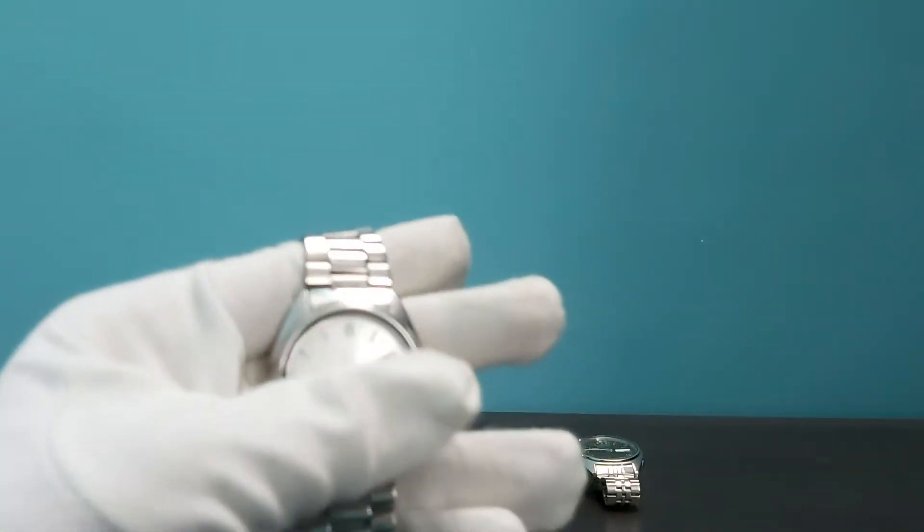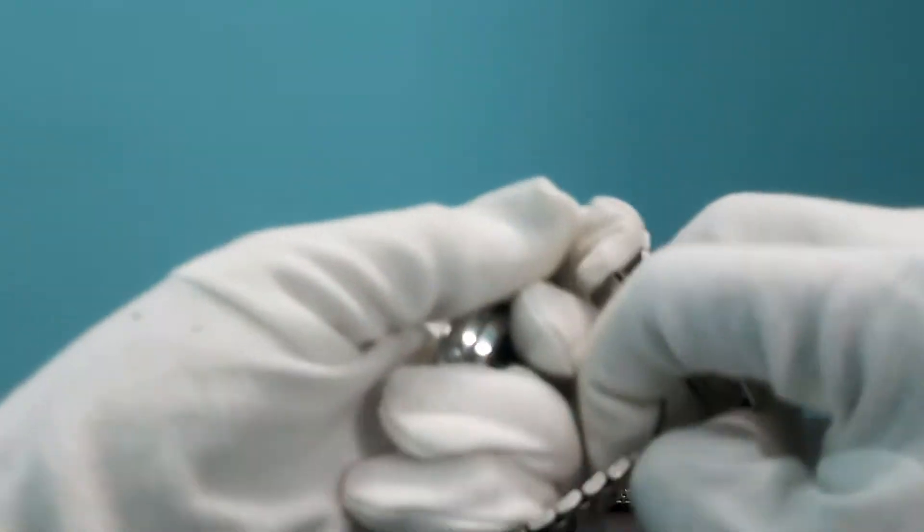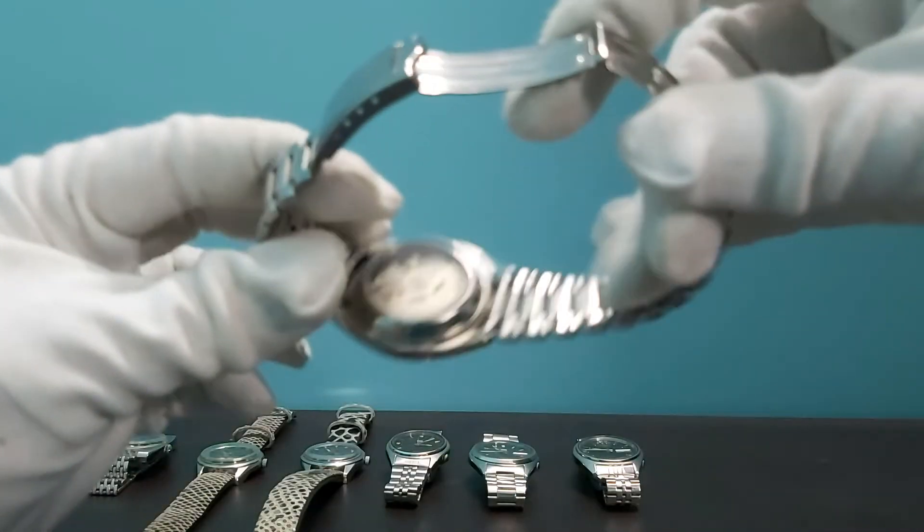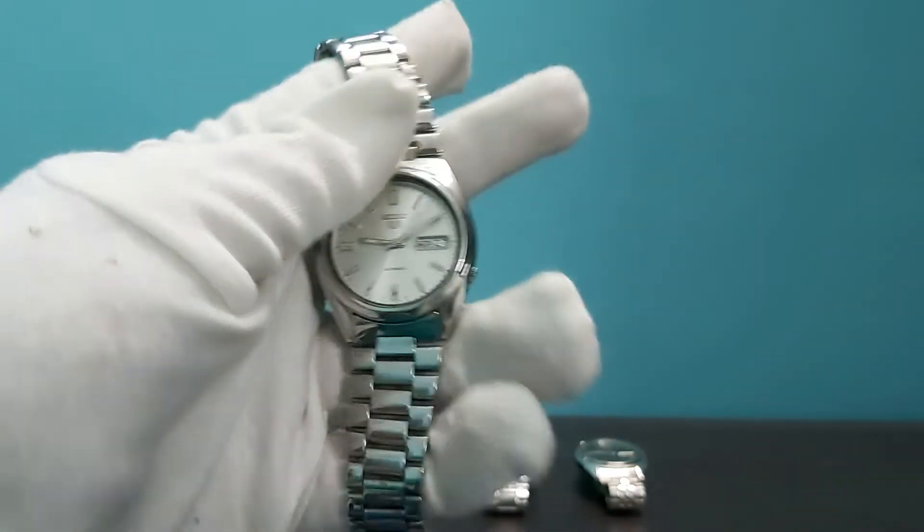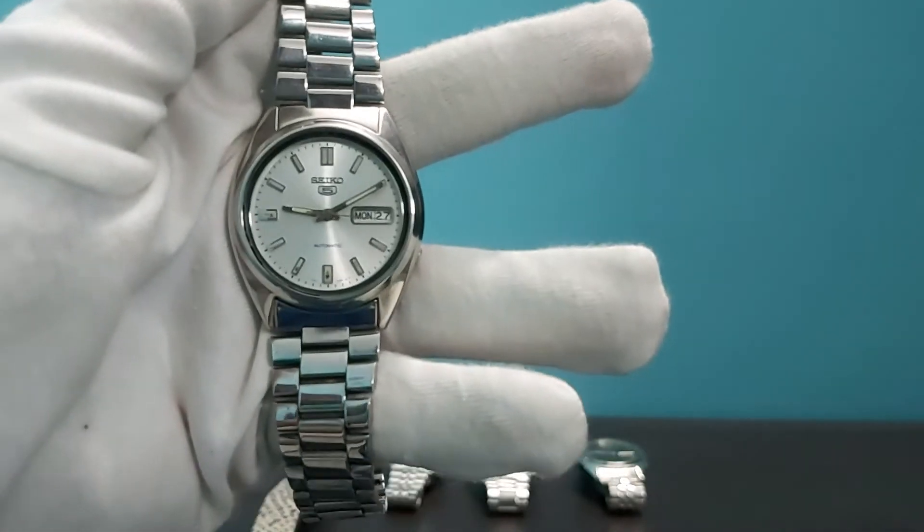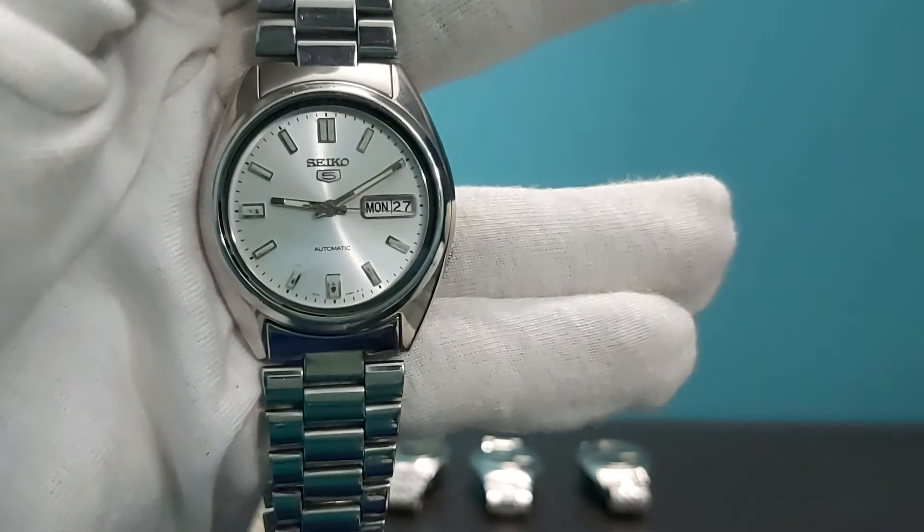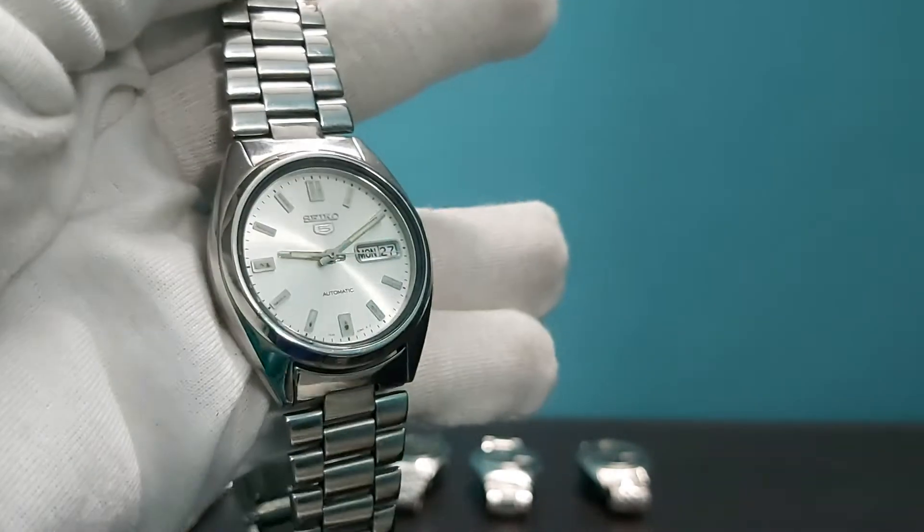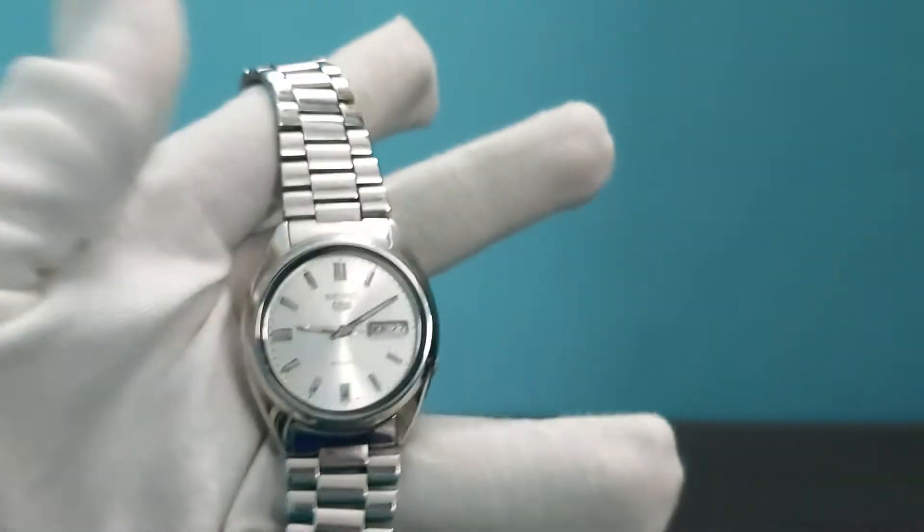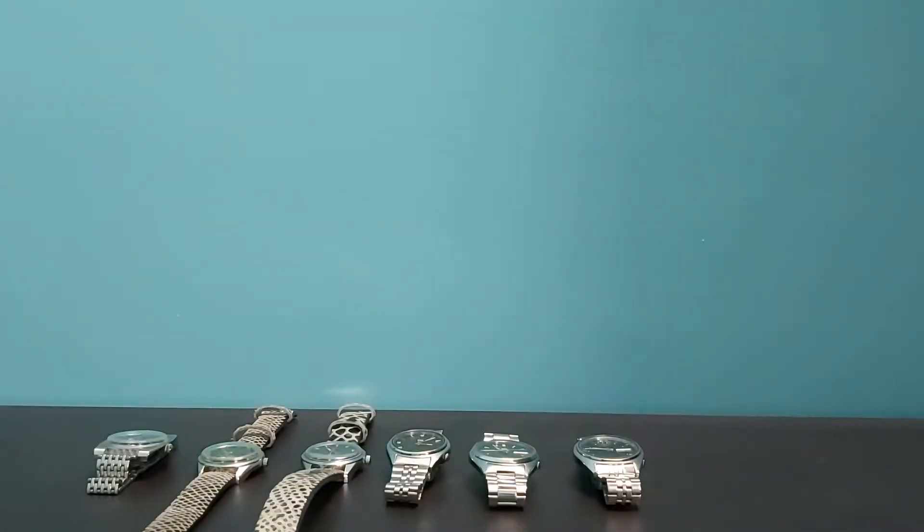So let's see the other one. This is the SNXS 79K. Also it has transparent case back, beautiful condition watch. Just at the six o'clock indices there is a little spot between the six and the seven and the nine. Rest, the watch is in good condition, beautiful sunburst style.